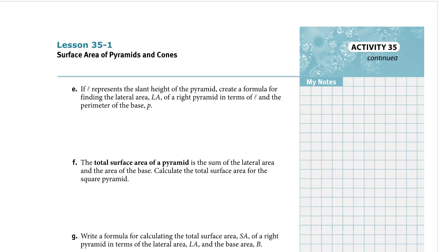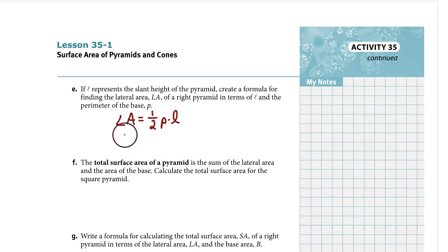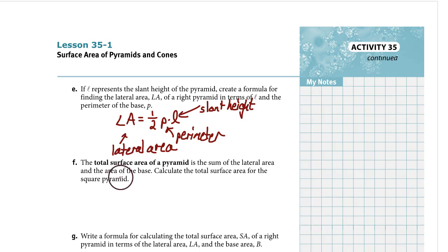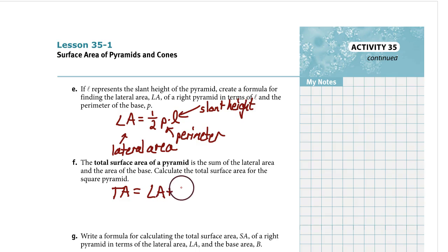Somewhere in this handout you need to record the formula for lateral area of a pyramid. It is one-half times the perimeter of the base times the slant height. LA means lateral area — the area of all of the triangle faces. The letter P means perimeter, the distance around the base. And the letter L is slant height, the distance from the top of the pyramid running down the middle of one of the triangle faces. Right next to that, write the formula for total surface area — call it TA or SA. That's equal to the lateral area plus the area of the base.